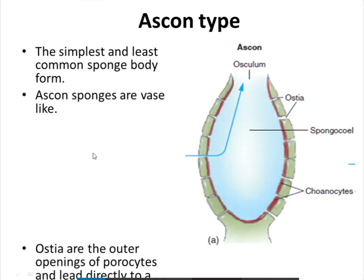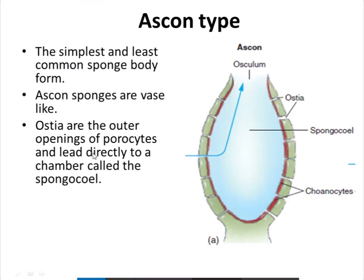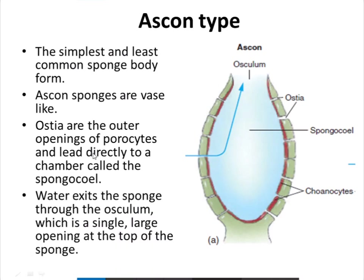In the Ascon type, ostia are the outer openings that lead directly to the chamber called the spongocoel. Water exits the sponge through the osculum, a single large opening at the top. In the diagram, the osculum is at the top, and there are many ostia but only a single osculum. The spongocoel is the body cavity, and the choanocytes lining it beat their flagella to drive water movement. The ostia open directly into the spongocoel — this is the simplest body form.